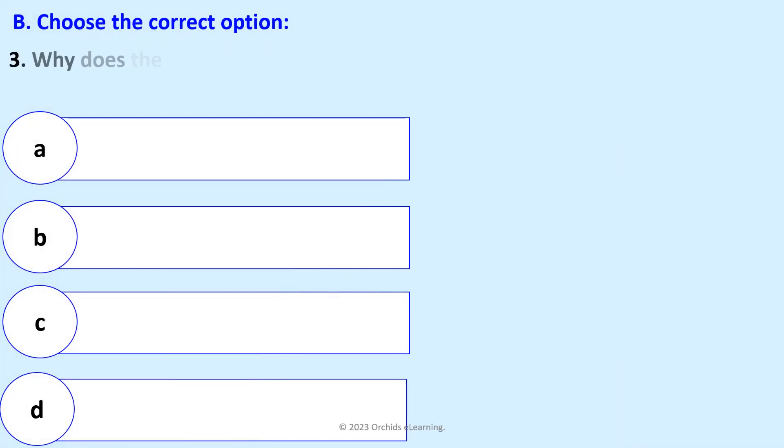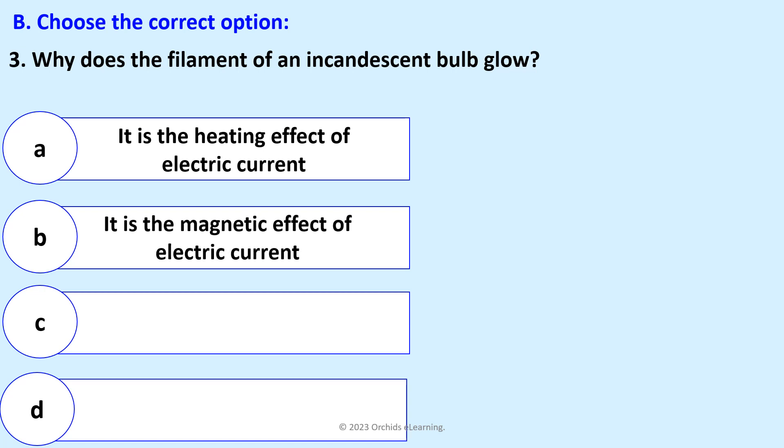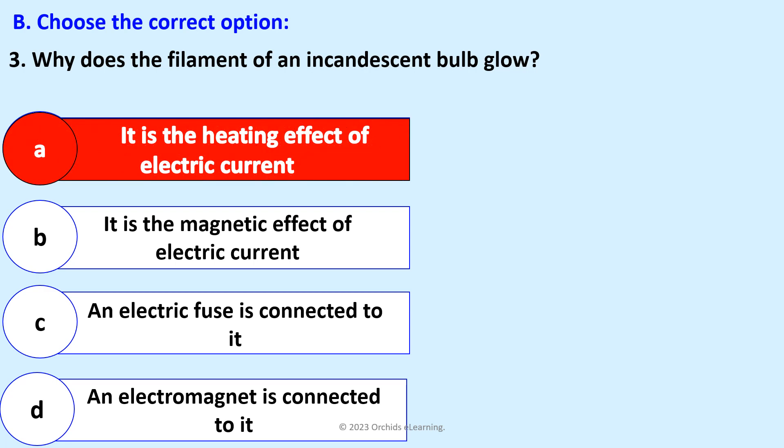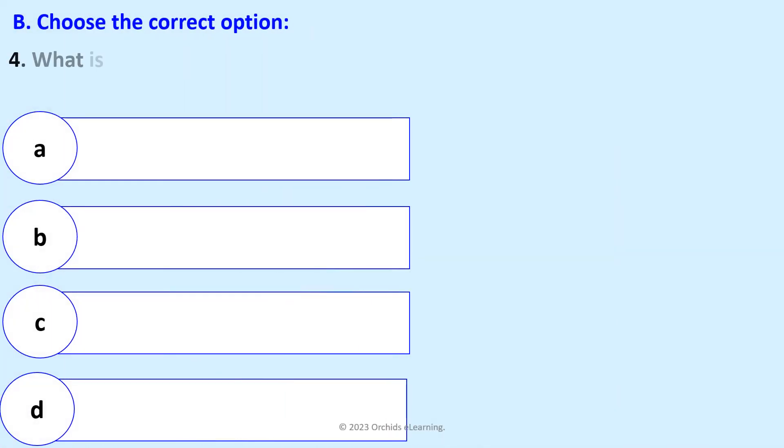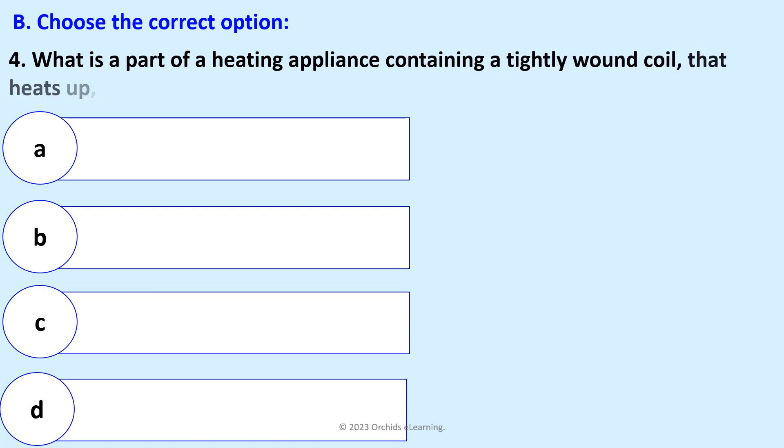The circuit is closed and current flows through it. Why does the filament of an incandescent bulb glow? It is the heating effect of electric current. What is a part of a heating appliance containing a tightly wound coil that heats up called?